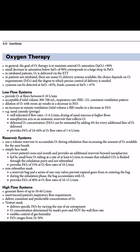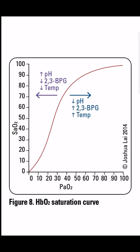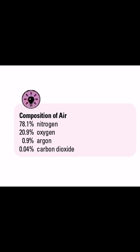High flow systems generate flows of up to 50–60 L/min, meeting or exceeding the patient's inspiratory flow requirement, and deliver a consistent and predictable concentration of O2. The Venturi mask delivers a specific FiO2 by varying the size of air entrainment; oxygen concentration is determined by mask configuration and not the wall flow rate, enabling control of gas humidity. FiO2 ranges from 24–50%. Composition of air: 78.1% nitrogen, 20.9% oxygen, 0.9% argon, 0.04% carbon dioxide.